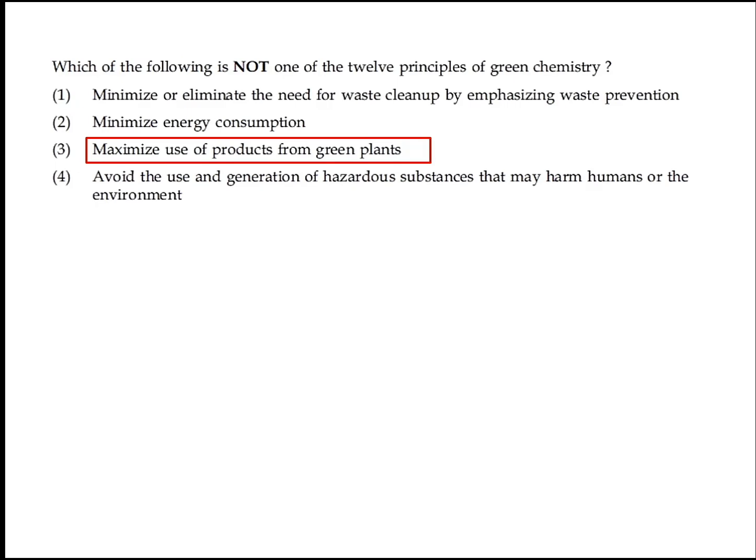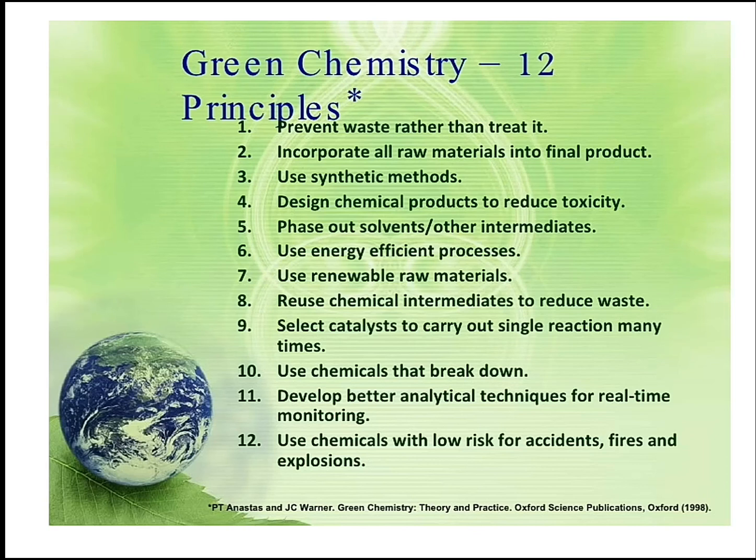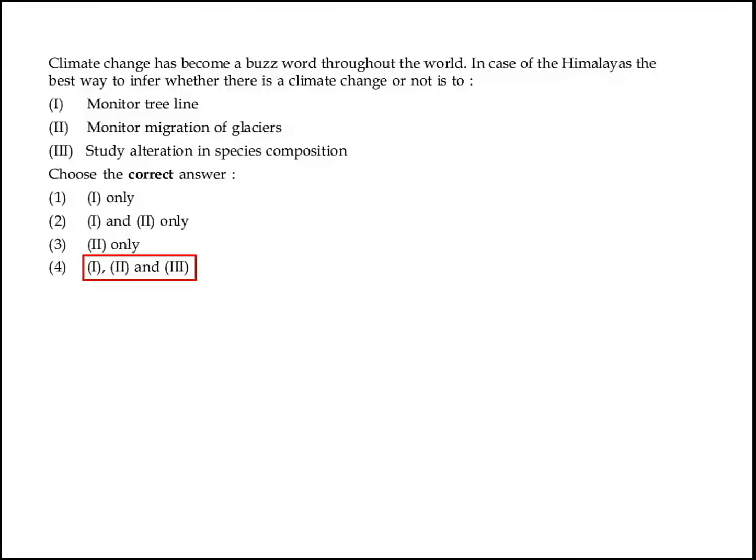Which of the following methods is not one of the 12 principles of green chemistry? Maximize use of products from green plants. Option 3 is the right answer. In case of the Himalayas, the best way to infer climate change is to monitor the tree line, monitor migration of glaciers, and study alteration in species composition. Option 4 — 1, 2, and 3 — is the right answer.